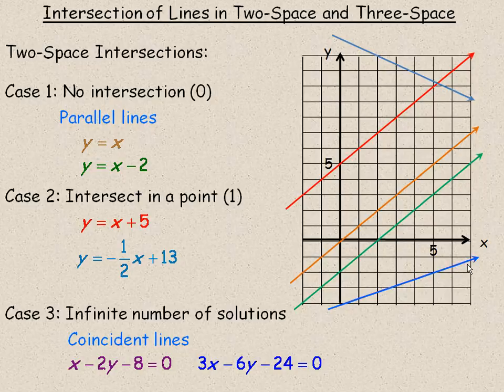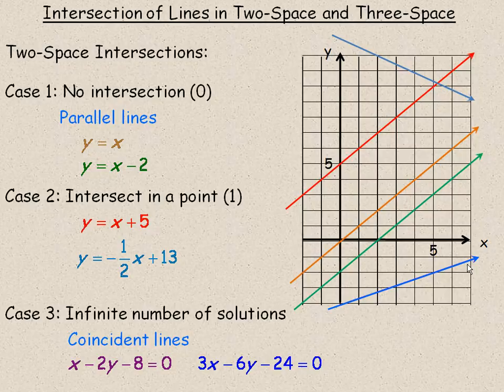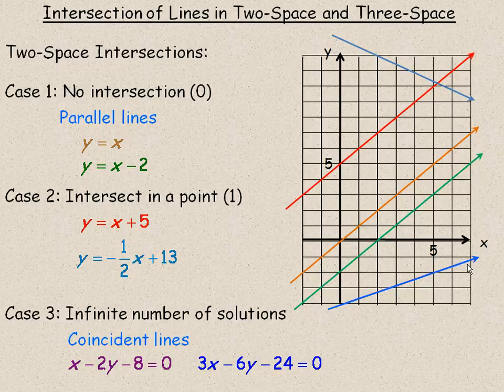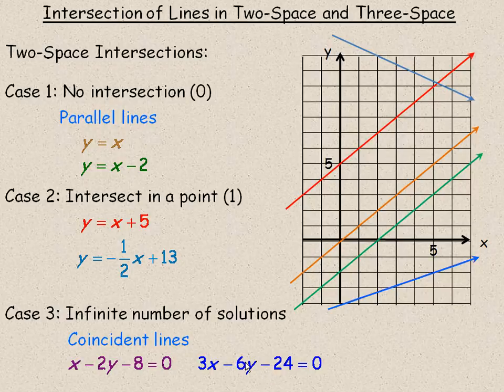They are the same line. That's what coincident lines mean. You've taken the two equations, perhaps found a multiple of one to get the second, but they're really the same line. And so they would share all points in common. Every point that's on this line is also on this line, and so they would have an infinite number of solutions.